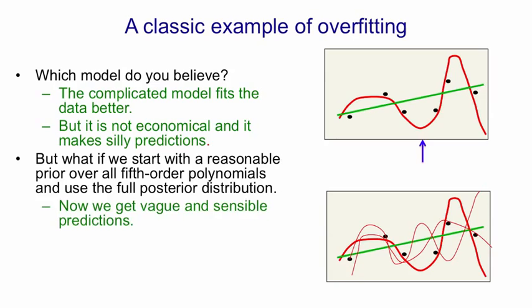Now we get much vaguer but much more sensible predictions. So where the blue arrow is, you'll see the different models predict very different things. And on average, they make a prediction quite close to the prediction made by the green line.